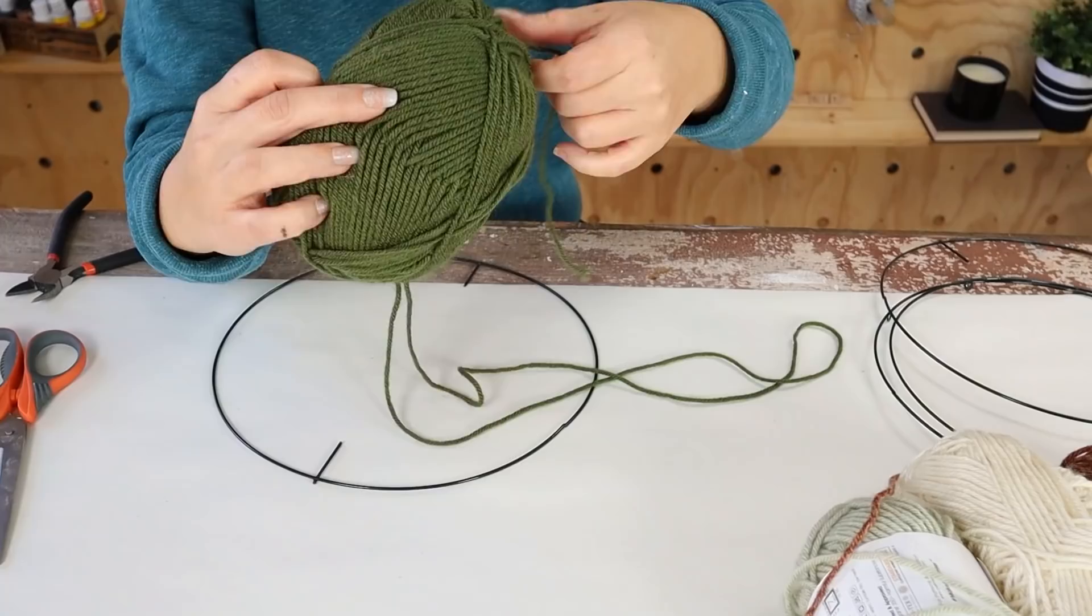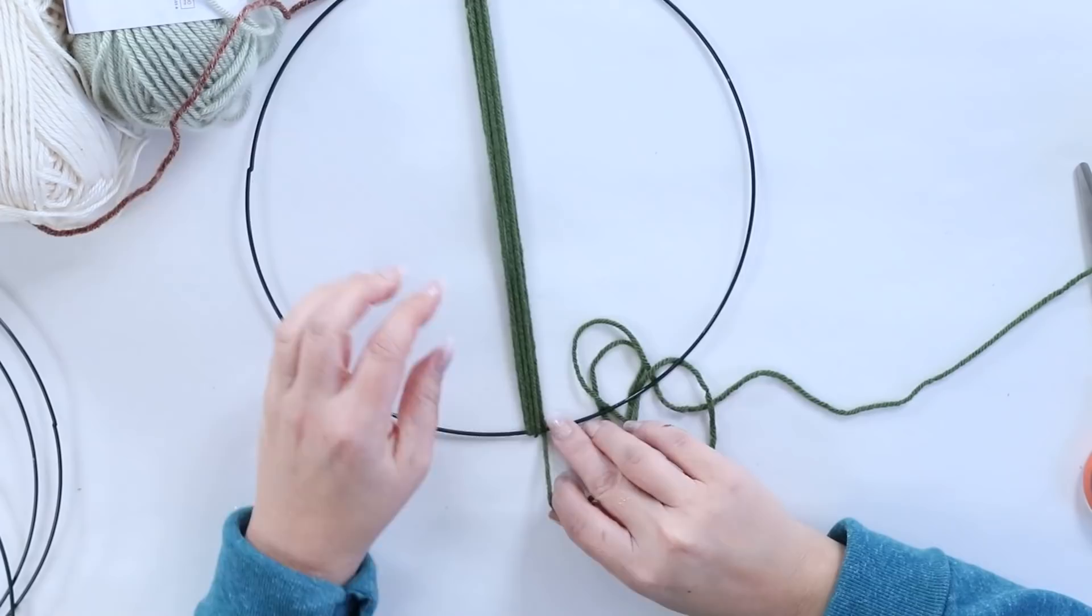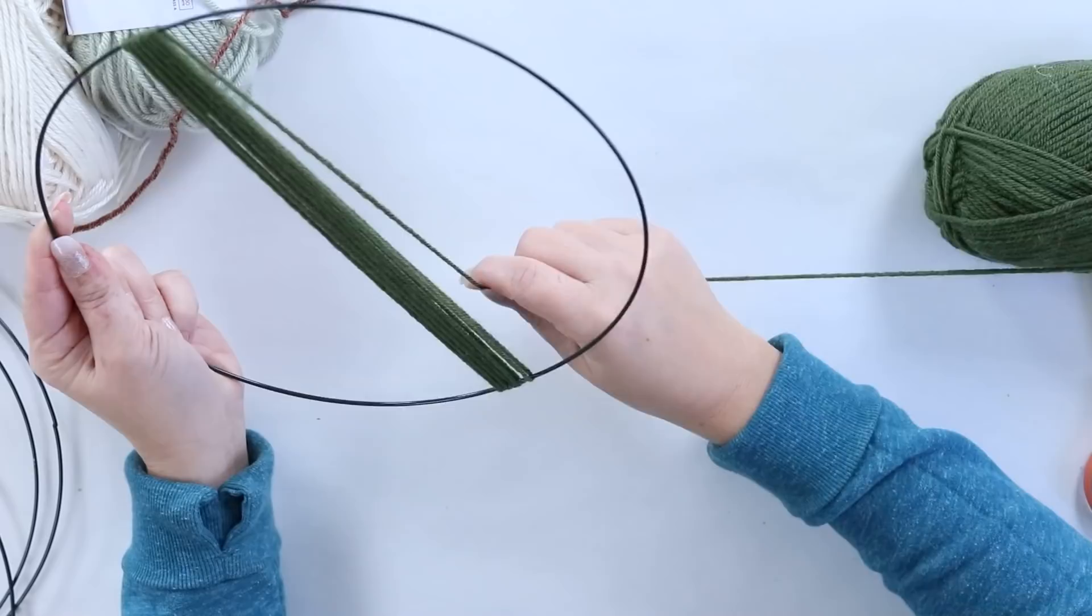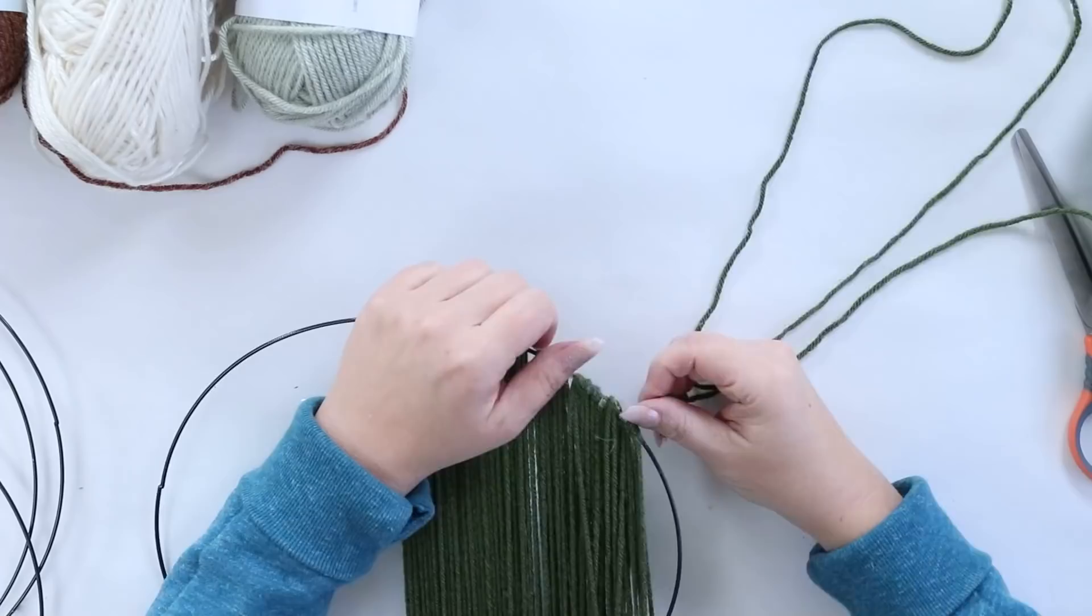Now my idea was I wanted to cover half of one of the wreath forms. So I started by hot gluing in the center portion and wrapping it around. Now if you don't continue to hot glue, your yarn's not going to stay in place very well. I would say every other time you go around, you're going to have to add some hot glue to the back just to kind of hold that yarn in place. Now I did that all the way until I got to the end.